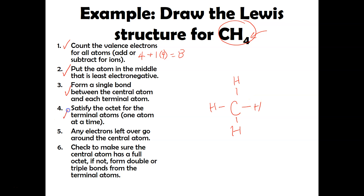There aren't any electrons left over because we have eight, so step five is done. And for step six — the important one — I have to make sure the central atom has a full octet. Carbon has a total of eight electrons around it, so we're good there too. That's an example for drawing the Lewis structure for methane.